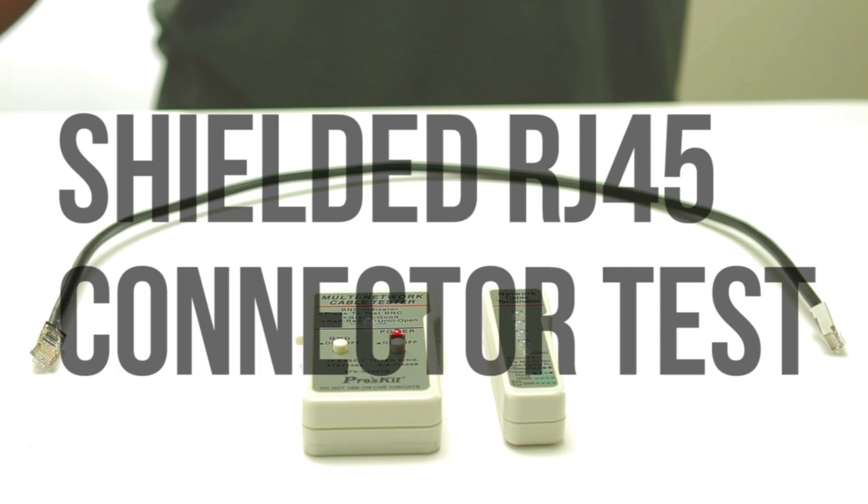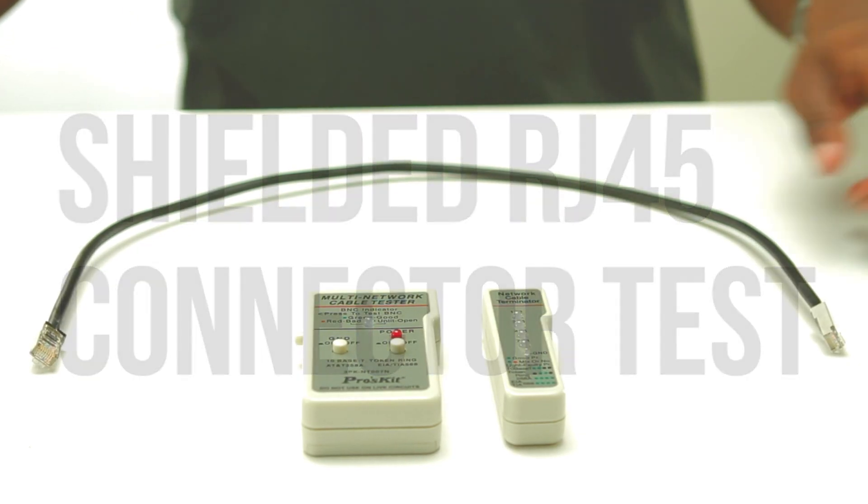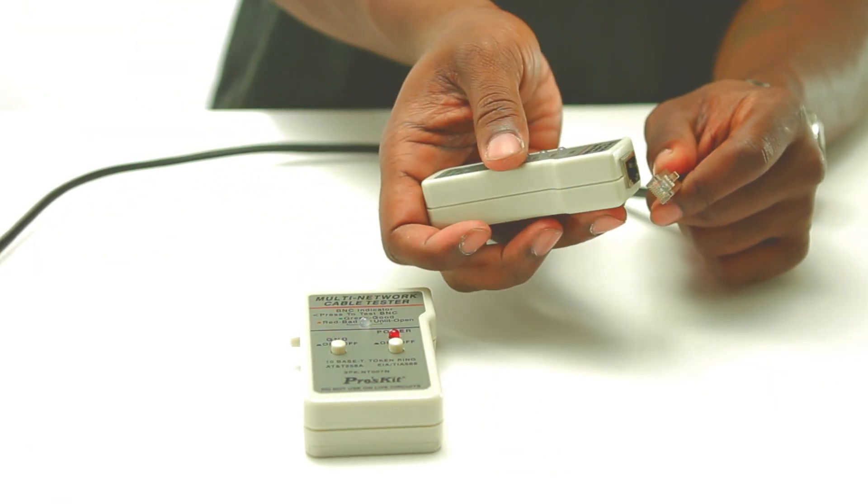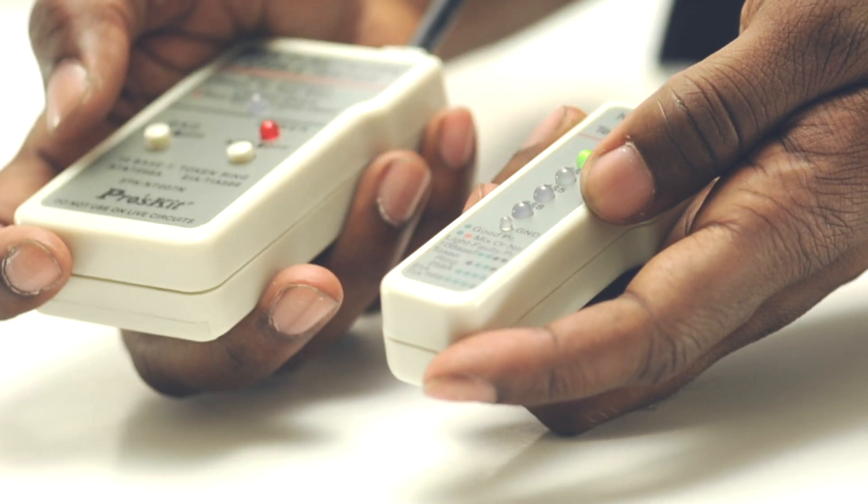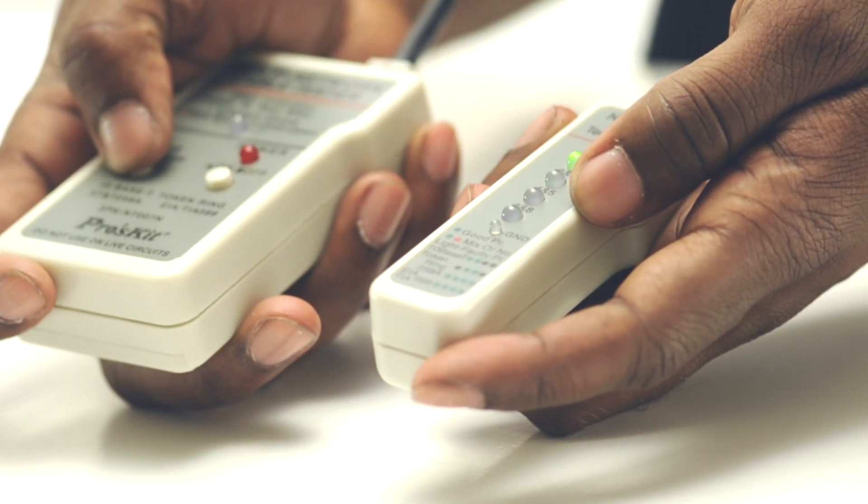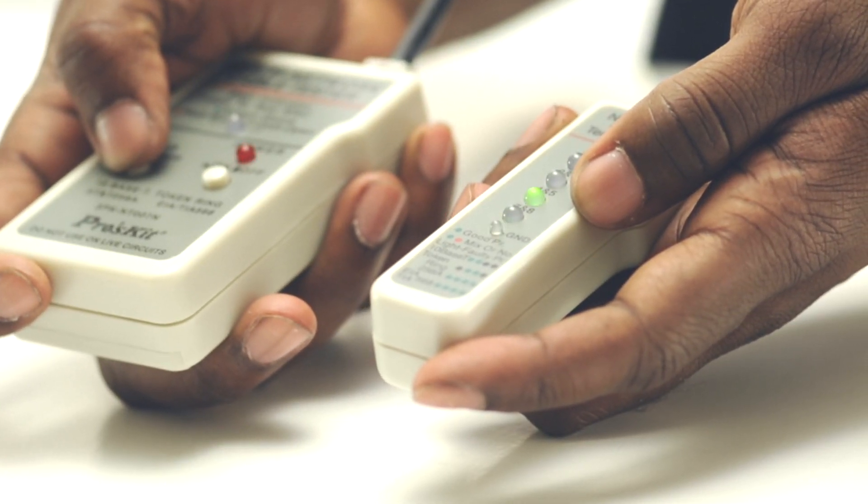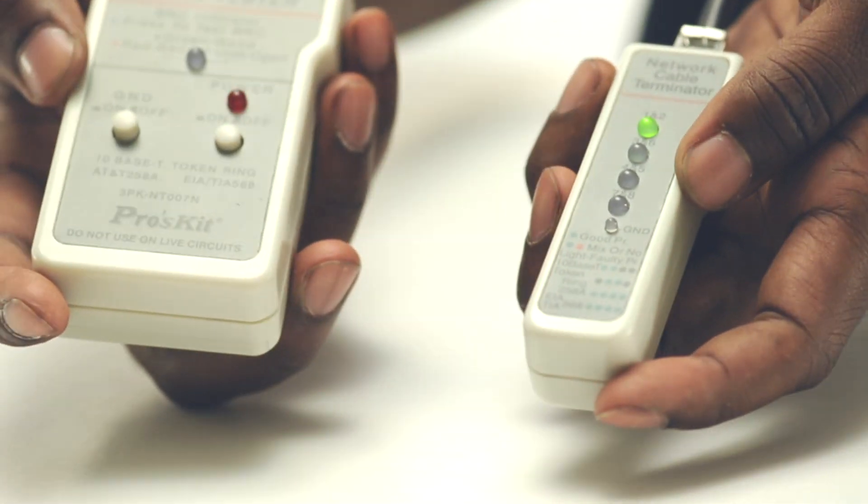The final step is to test our cable. Insert the RJ45 connectors into the tester. Please note your tester might look slightly different. The green lights give us a visual confirmation that we have successfully made and tested a Cat5e shielded patch cable.